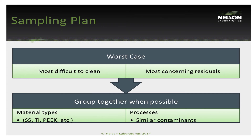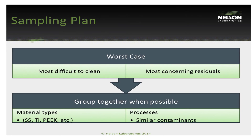It's not always feasible to test every device manufactured, so grouping is acceptable. Choose worst-case scenarios — for example, the most difficult to clean device or the process most likely to leave residuals. Group by material type, keeping metals such as stainless steel or titanium together and polymers separate. Group similar processing steps, and group similar patient-contacting devices: a device with cerebrospinal fluid contact would be treated very differently than one with only external skin contact.